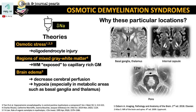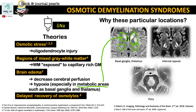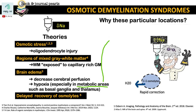Another theory why the basal ganglia and thalamus are affected is that during hyponatremia, there is brain edema. Because of this edema, there is decreased cerebral perfusion and hypoxia, especially for these highly metabolic regions, the basal ganglia and thalamus. Lastly, another theory is that some areas of the brain are slow to recover osmolites. So during rapid correction of hyponatremia, the cell dies if the osmolites are slow to enter the cell to balance the osmolality.